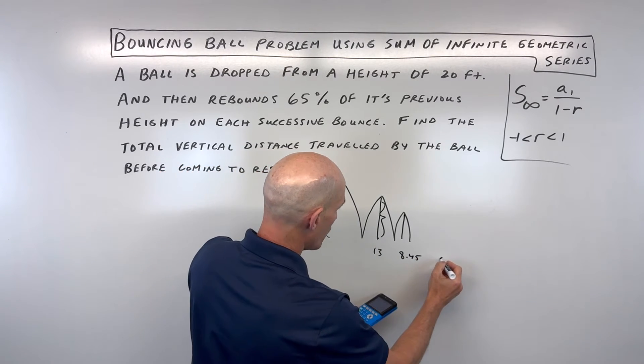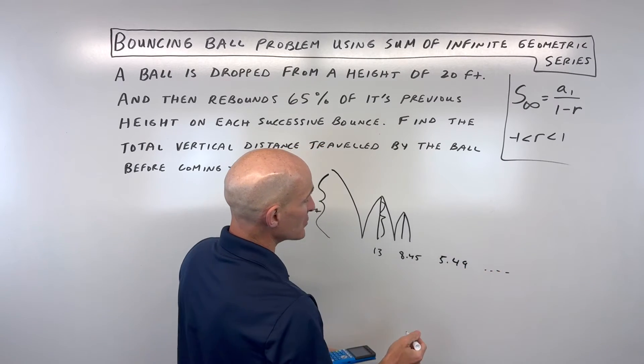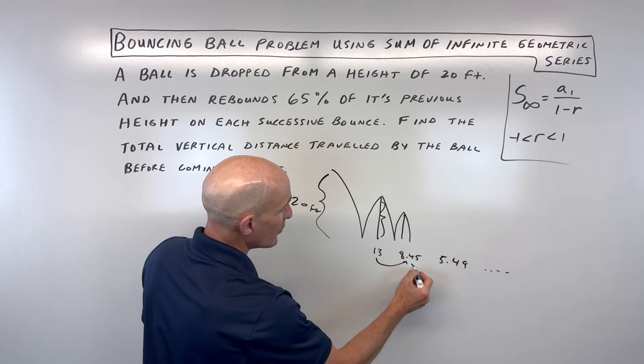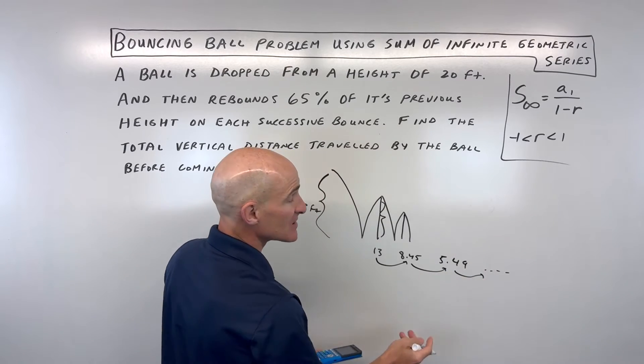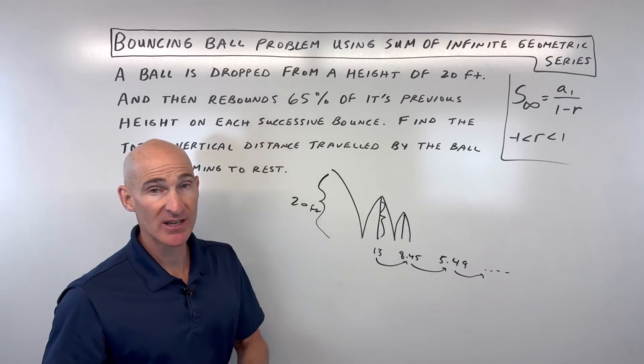And then if we do again, 5.49, etc. So basically what we're doing, you see we're multiplying by 0.65, 0.65, 0.65. When you multiply by the same quantity each time, that's a geometric series.